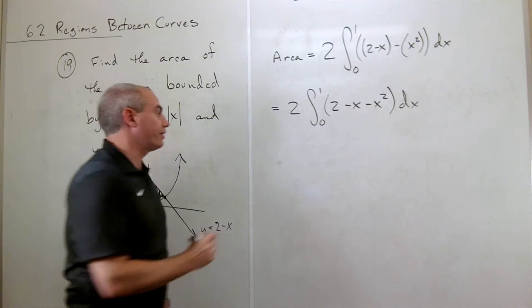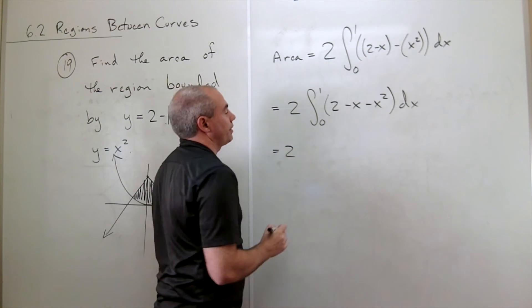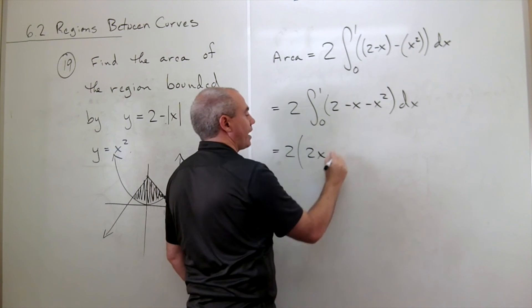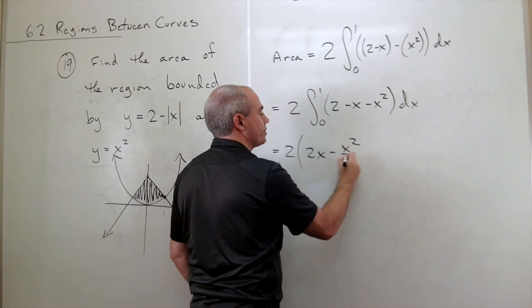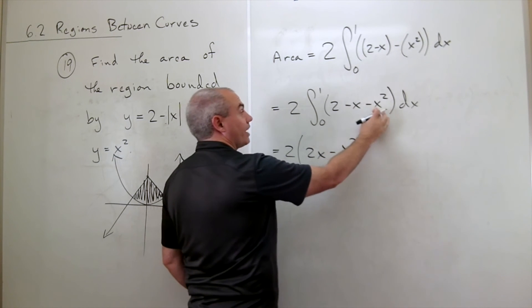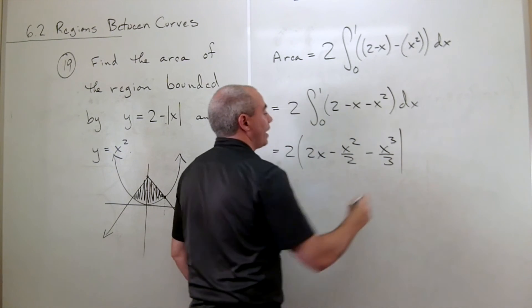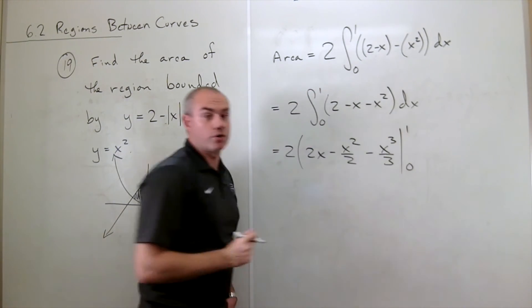Let's take an antiderivative. The 2 is still there. Antiderivative of 2 is 2x. Antiderivative of negative x is minus x squared over 2. And antiderivative of negative x squared is minus x cubed over 3 evaluated from 0 to 1.